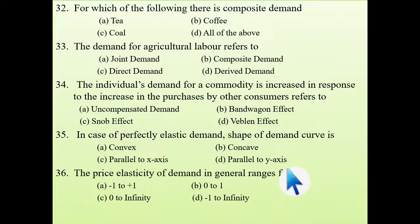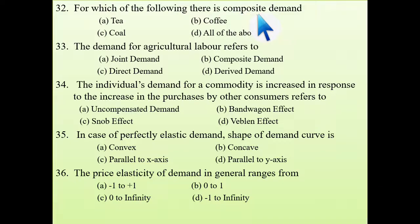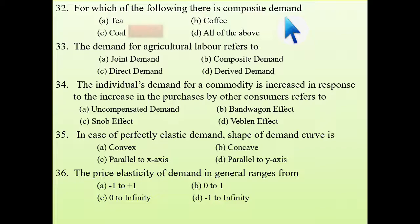Next: for which of the following is there composite demand — meaning one product having demand for many different areas? The answer is coal, because tea and coffee are used for a particular purpose, but coal is used for various purposes, so it is a composite demand.